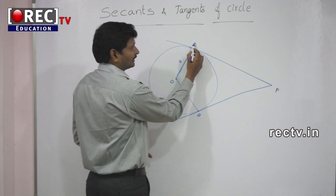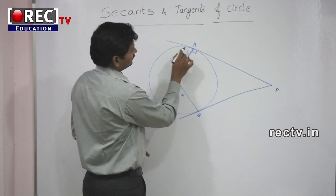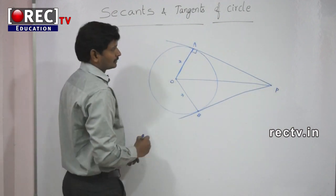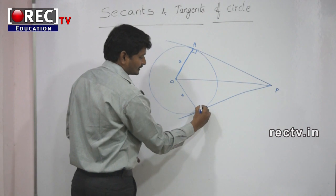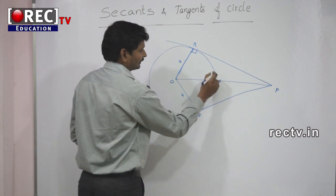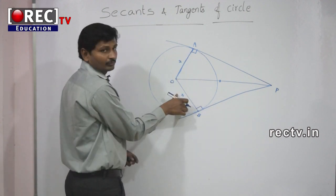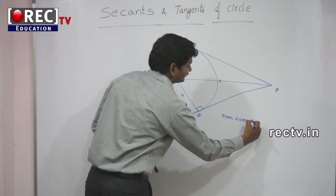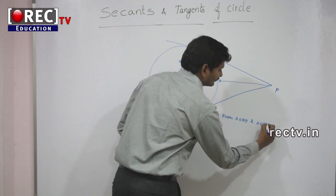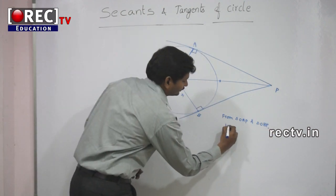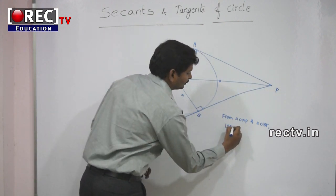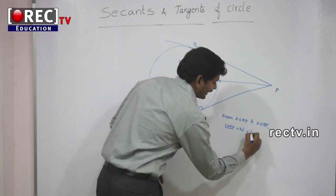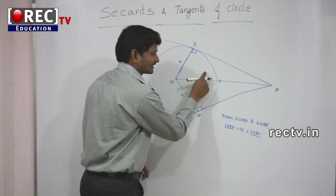At point A, the tangent is at 90 degrees with the radius. If we join the line OP, here the angle OAP is equal to 90 degrees, and the angle OBP is also equal to 90 degrees. OP is the common side for triangle OAP and triangle OBP, and OA is equal to OB.